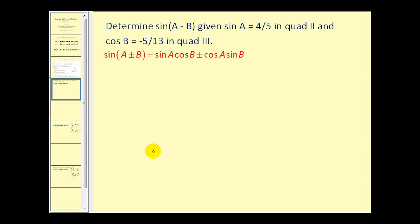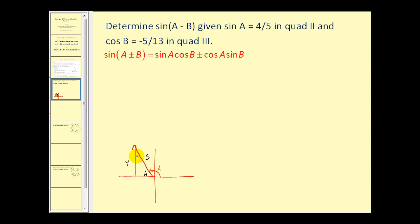For angle a, whose terminal side is in the second quadrant, we'll call this reference angle a'. Since sine(a) = 4/5, the opposite side is 4 and the hypotenuse is 5. This is a 3-4-5 right triangle, so the adjacent side equals negative 3 since we are in the second quadrant.